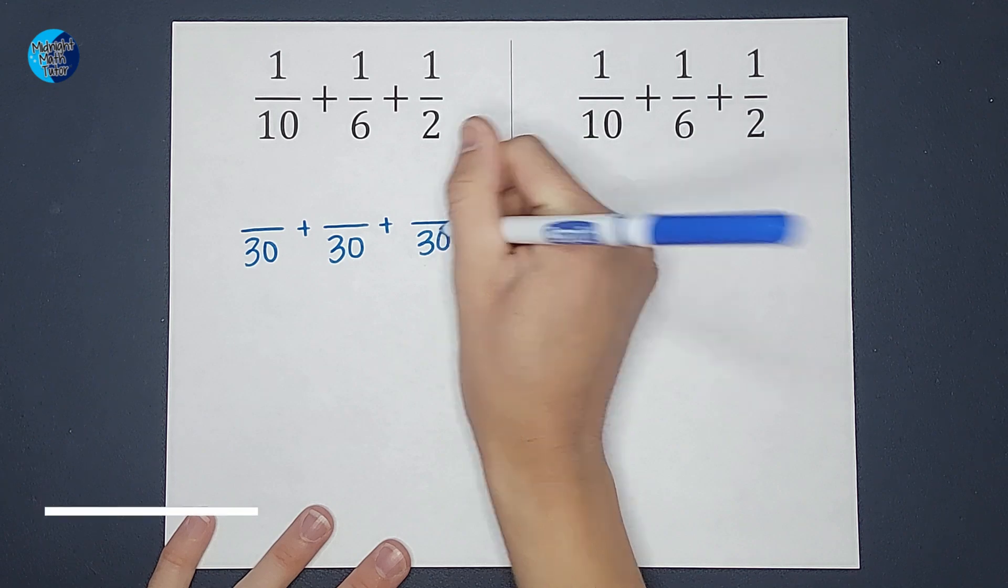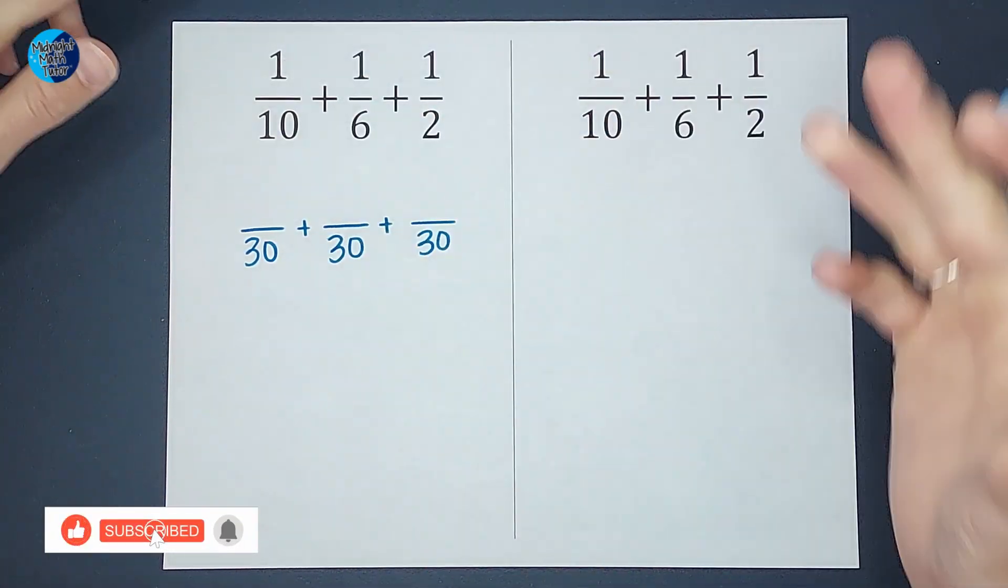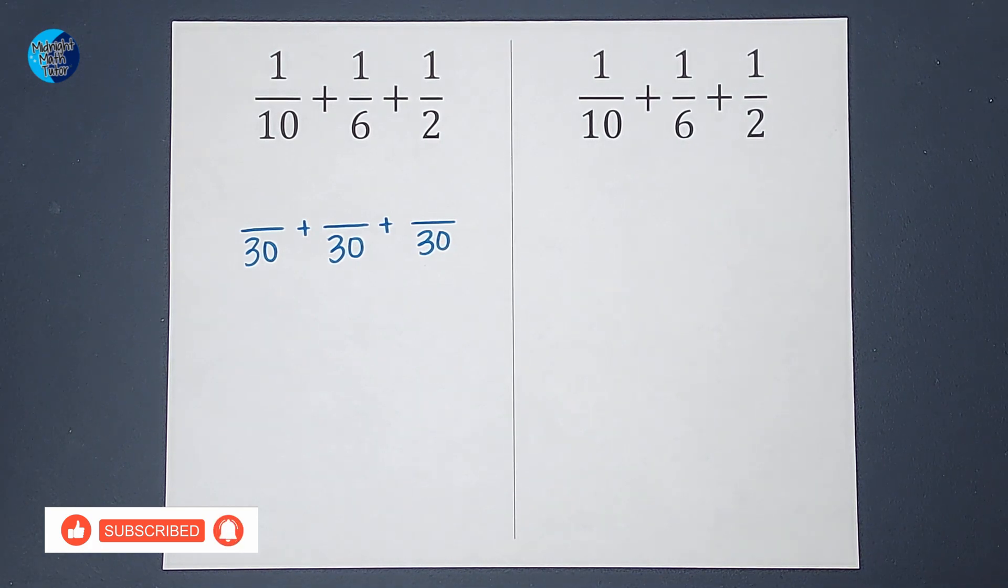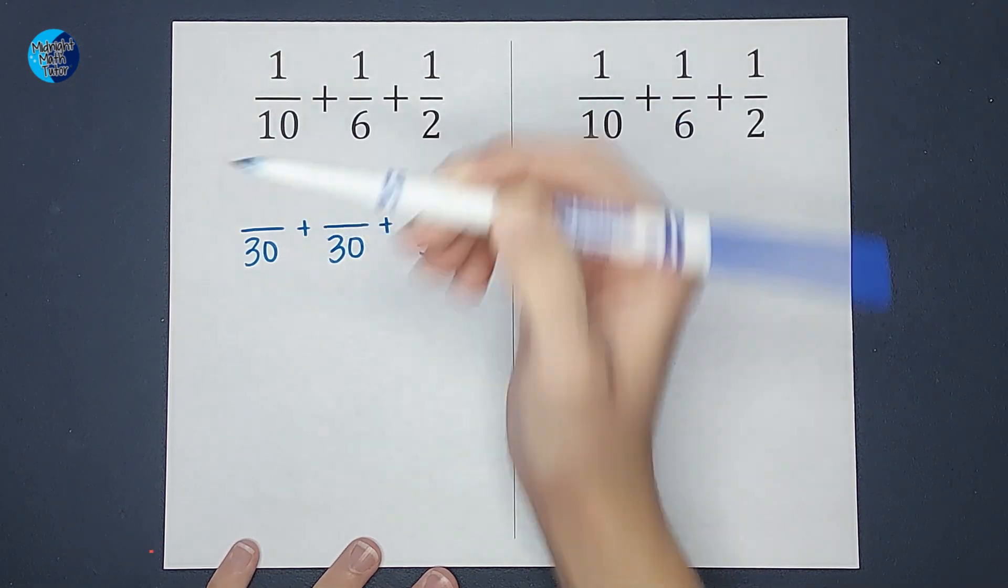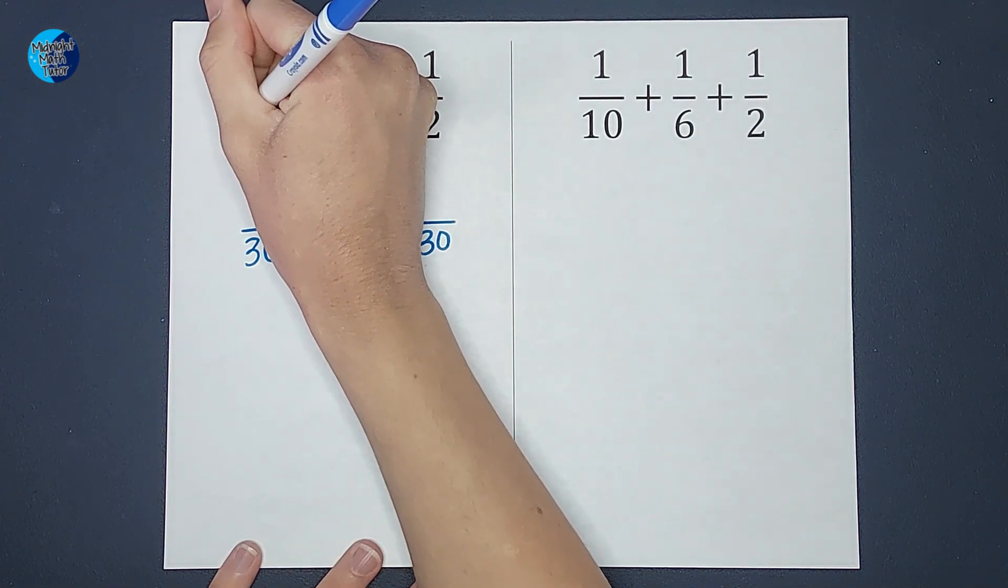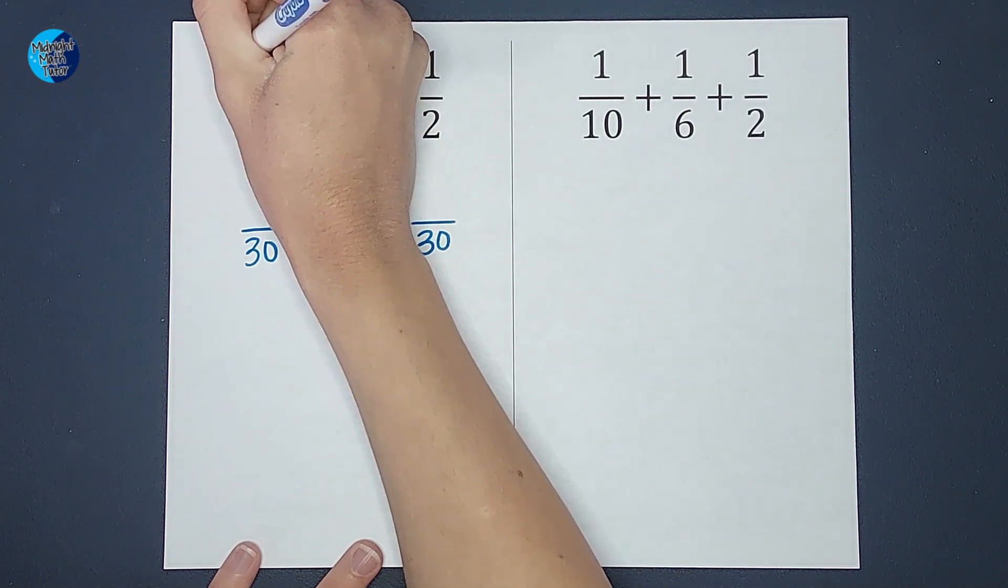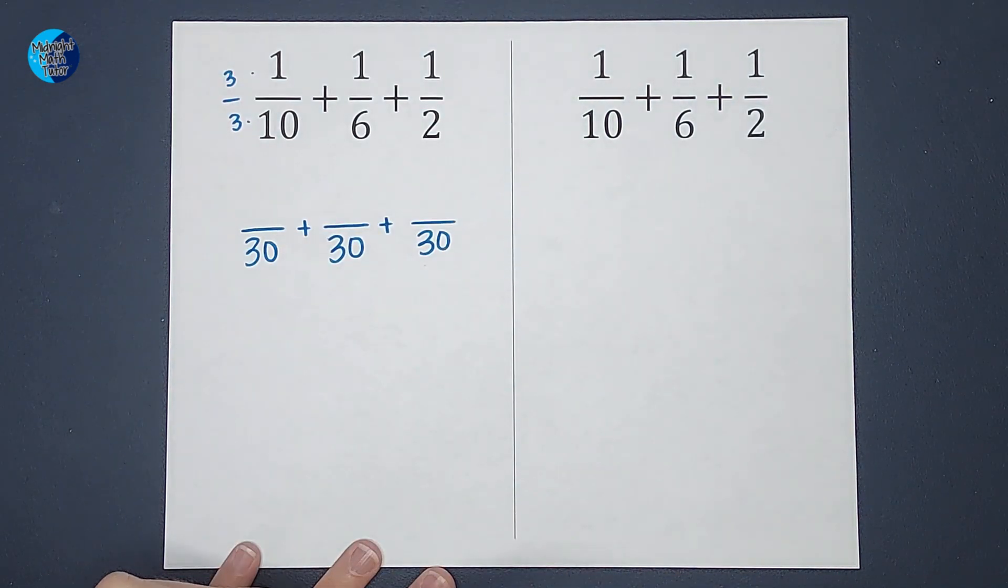But the catch is this fraction needs to be equal to this one, this one to this one. I can't just make up new fractions. So to get 10 to be 30, what did I do? I multiplied by three. Now, if I multiply the bottom by three, I need to also multiply the top by three. So three times one is three.